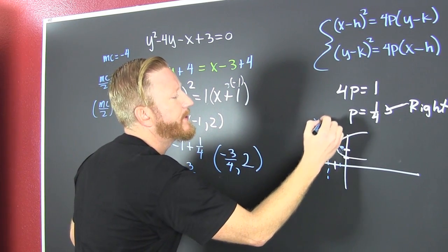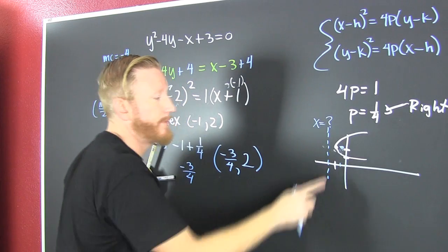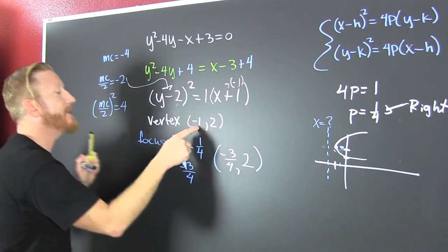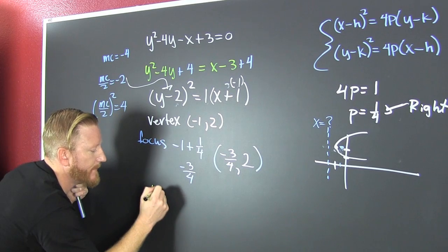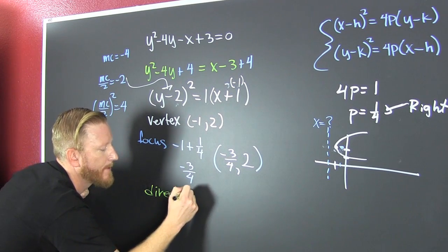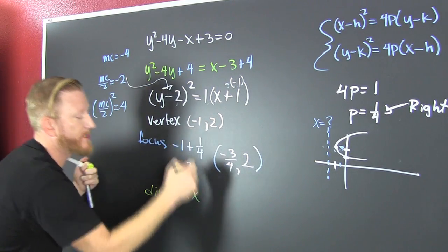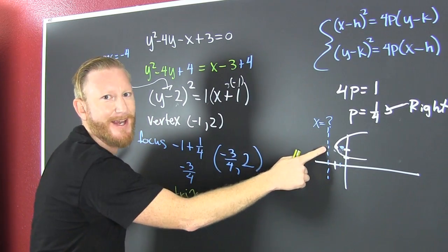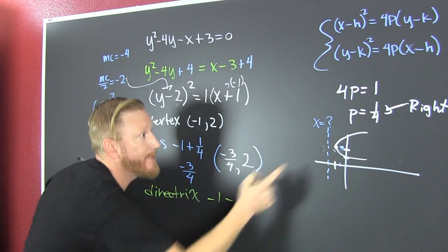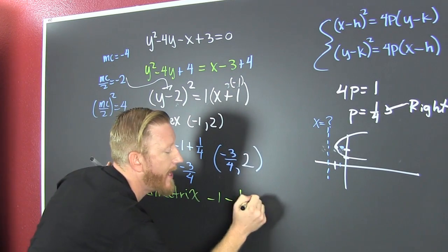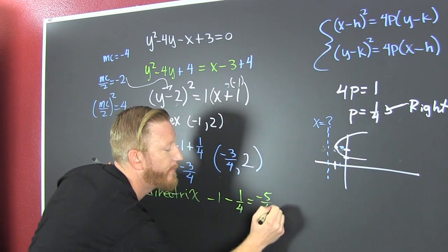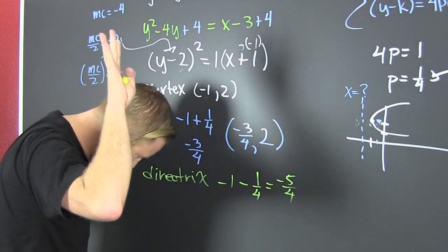That's x is equal to something. So let's find that new something. What am I changing? I'm changing my x. So I take my old x. My old x was a minus 1. And I'm getting more negative on my x's. So then I'm going to subtract off my p, minus 1 fourth. And when I do, I have a minus 5 fourths.